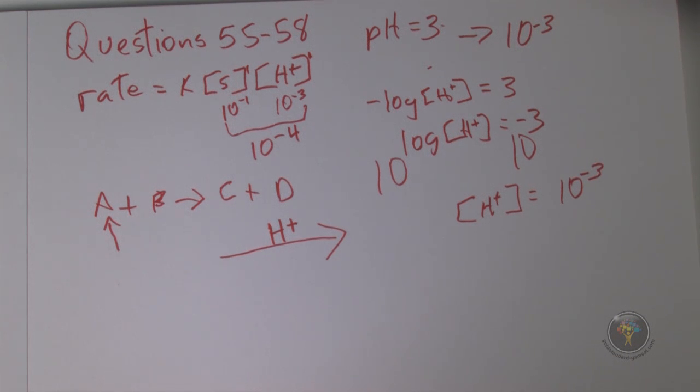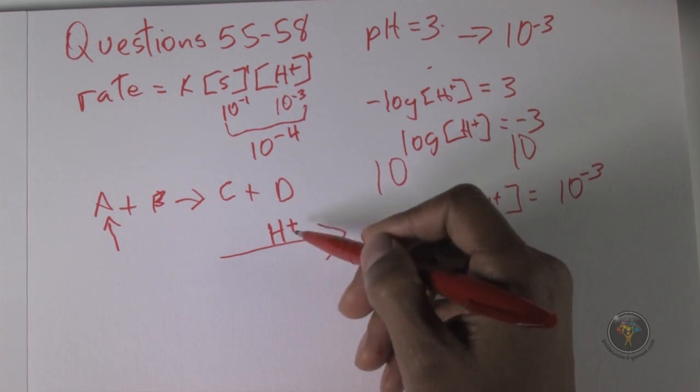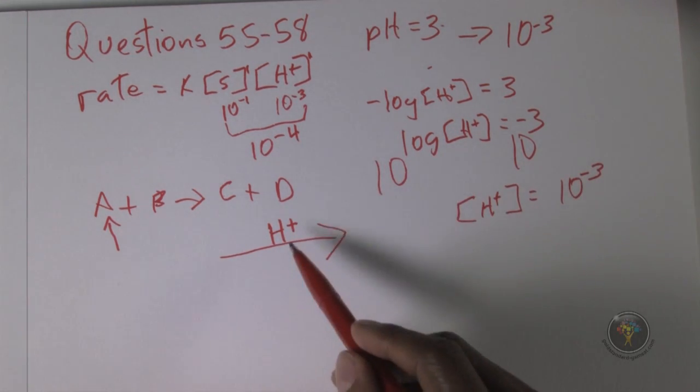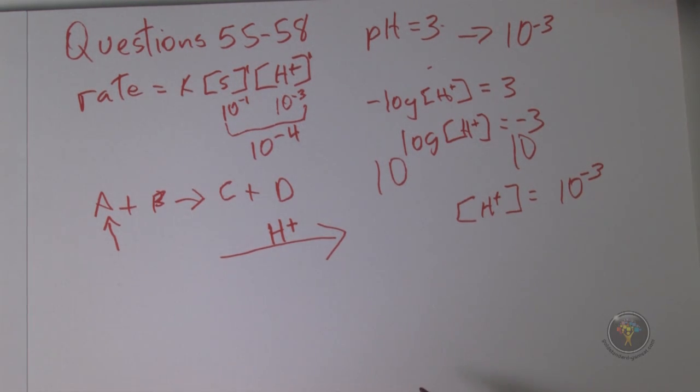Catalysts just make the reaction occur faster but they are not used up. They did say in the first paragraph it may be hydrolyzed in an acidic solution, giving us a little foreshadowing. It would have been helpful to put the H+ on the arrow to make us realize this is a catalyst. It makes the reaction occur faster but it's not used up, and that points to answer choice C - it must be regenerated.